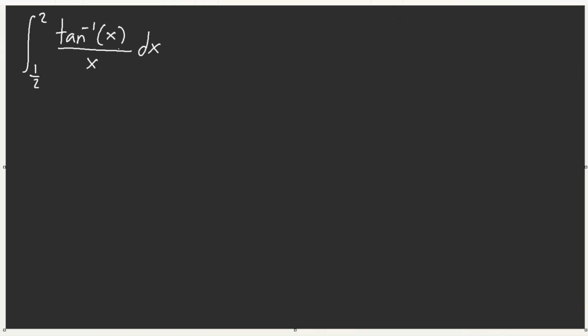Inverse tangent of x over x. And we have half, from half to 2. It's a little suspicious that we have, like, 1 over a to a as our bound. Very suspicious. I think I know what to do. So let u equal 1 over x.